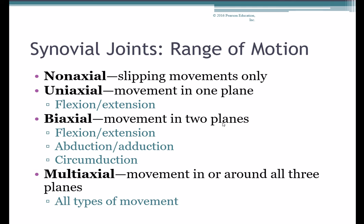In terms of joint physiology, one thing we look at is range of motion of our synovial joints. Non-axial joints only allow a slipping movement — not really moving along a whole plane or axis. Uniaxial joints can move in one plane, such as the medial-lateral plane, which gives flexion and extension. Biaxial joints move in two planes — not only can they do flexion and extension in the medial-lateral plane, but also abduction and adduction in the anterior-posterior plane. We'll go over all these movements in class because it's better to demonstrate them.